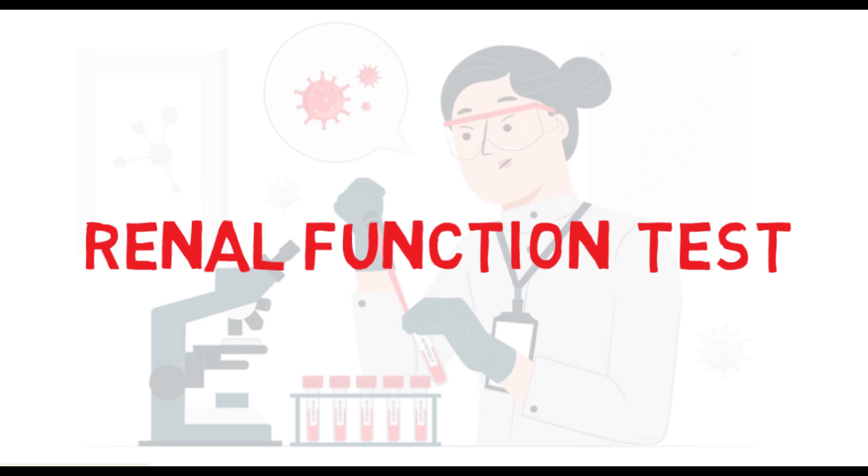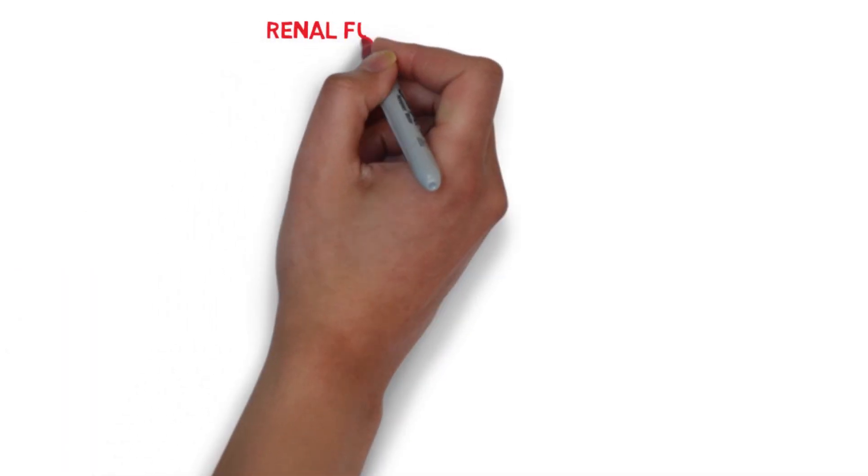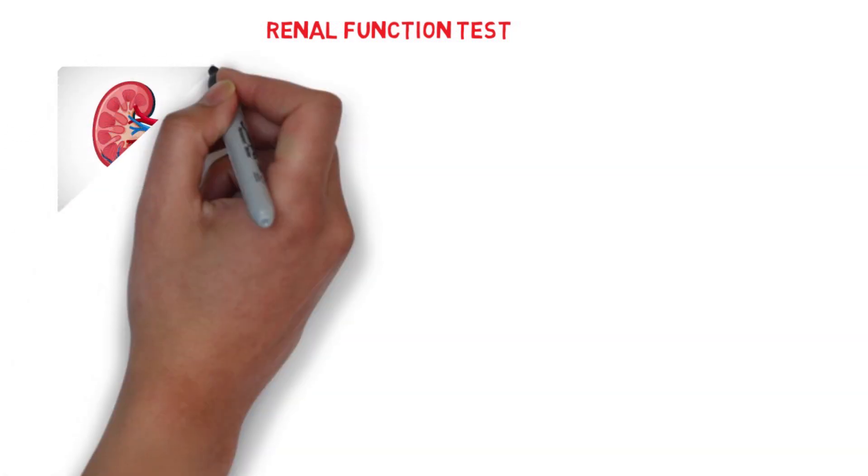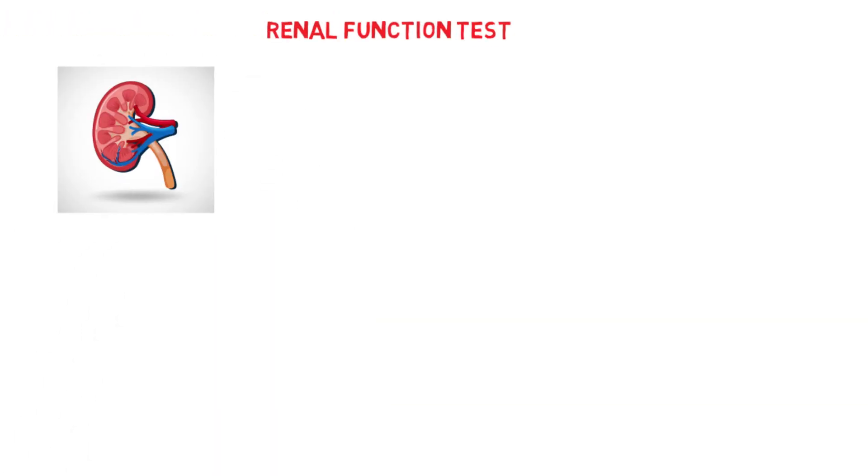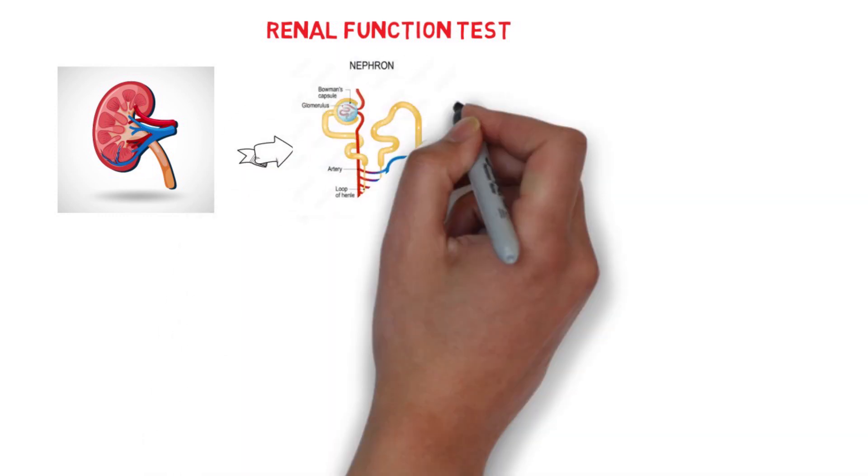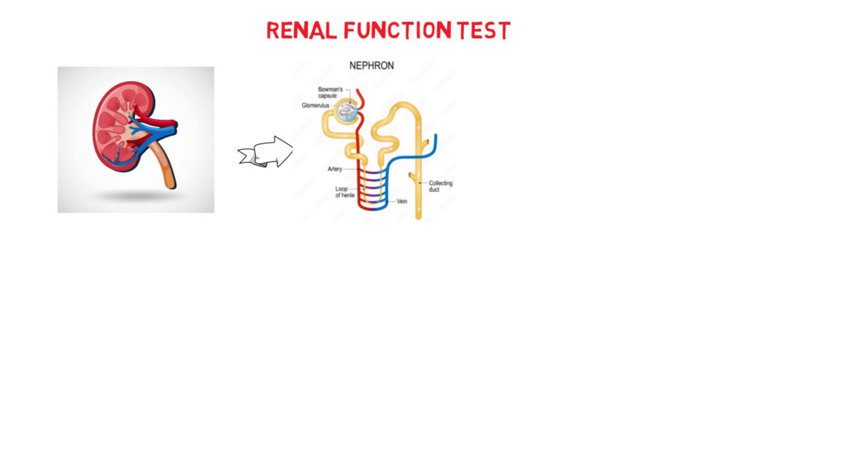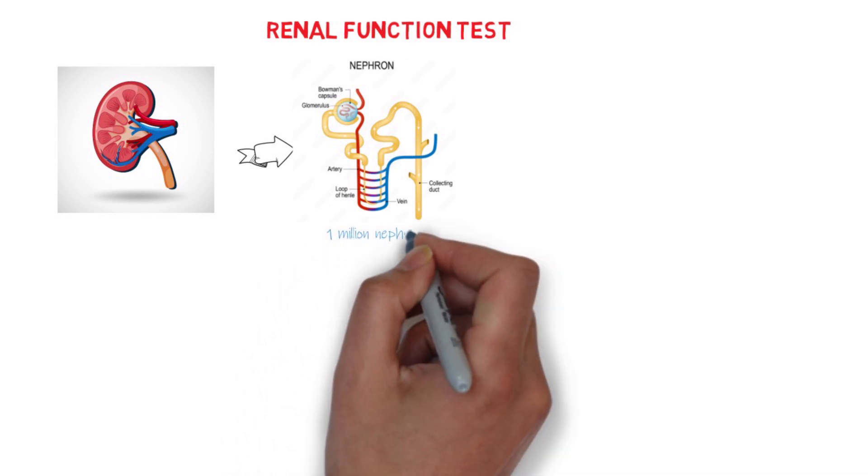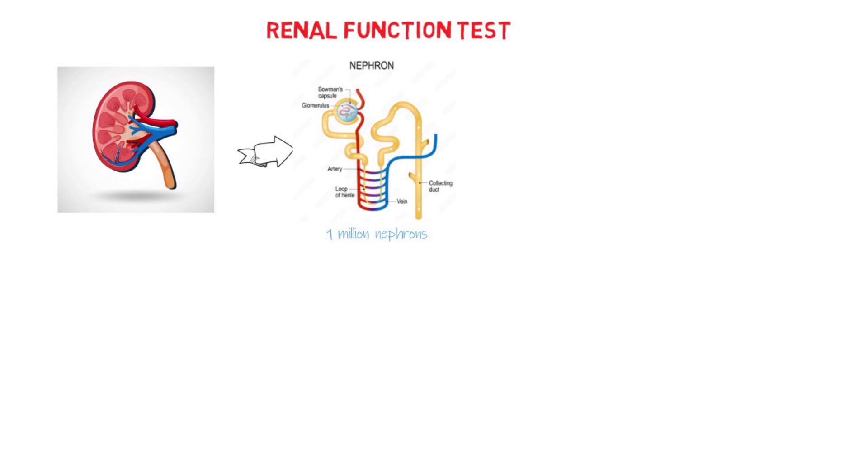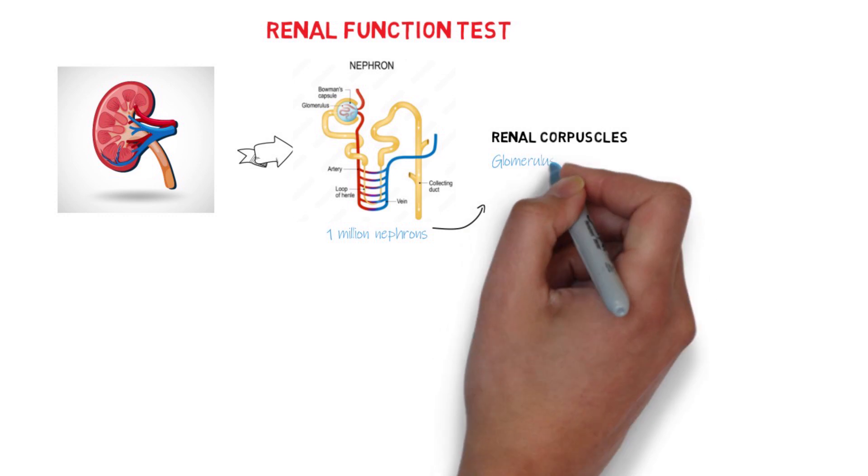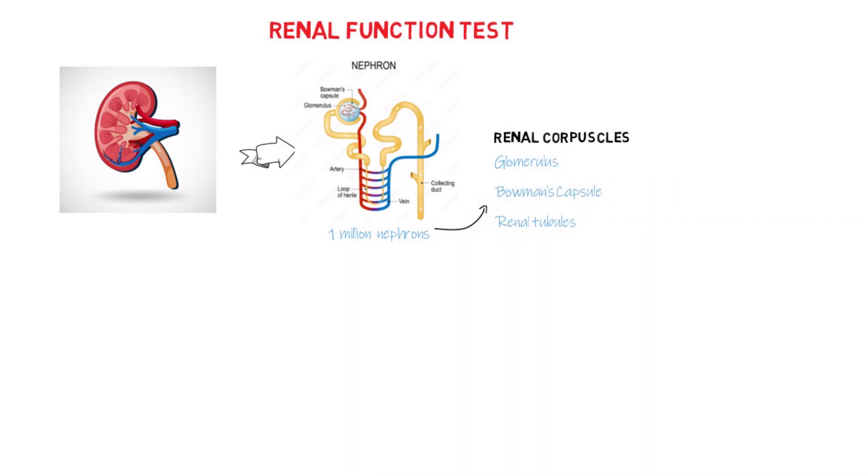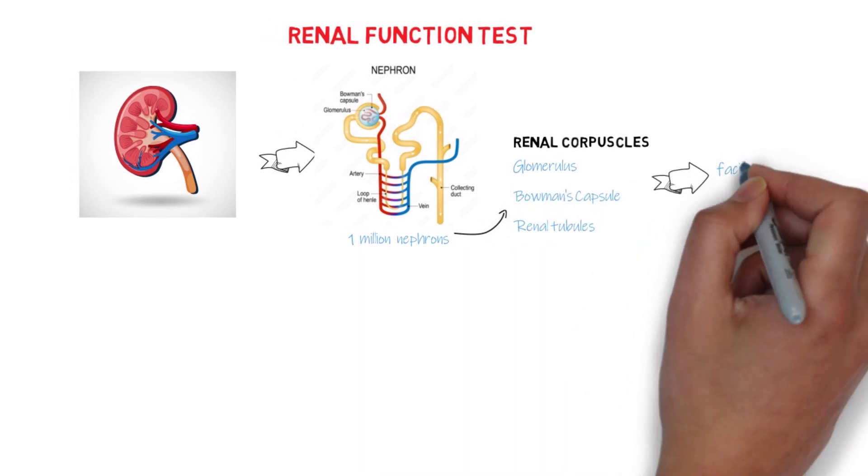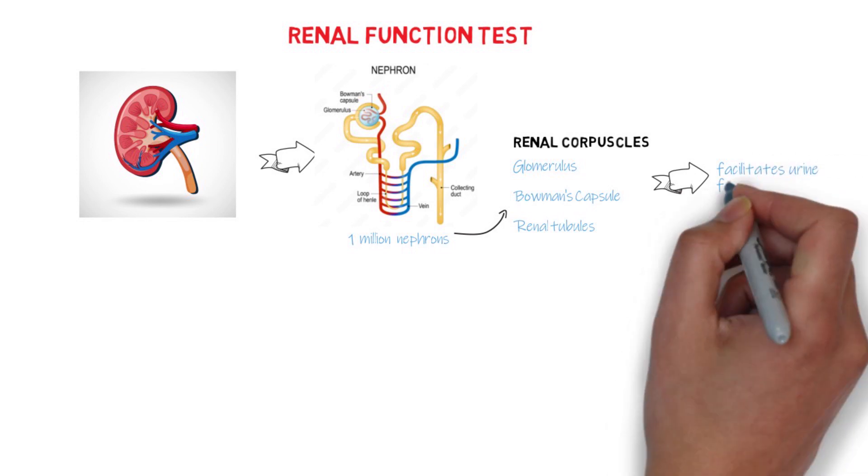We can't discuss the renal function test without knowing the physiology of the kidneys and the functions of the kidneys. The kidneys are vital organs in our body, and its functional unit is the nephron. Each kidney contains approximately 1 million nephrons. These nephrons have renal capsules which contain glomerulus, the Bowman capsule, and renal tubules that help to facilitate all of the processes of urine formation and excretion.